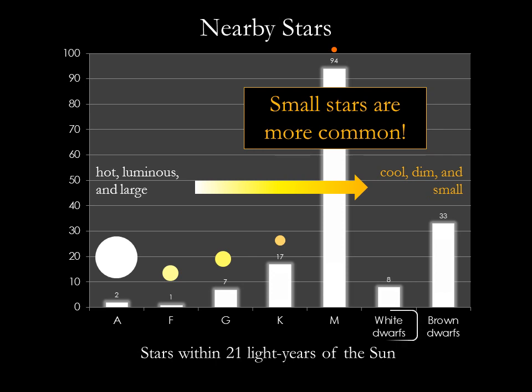Both white dwarfs and brown dwarfs are also small and faint. We'll talk more about both of these types of objects later in the semester. For now, it's enough to know that white dwarfs are dead stars that have run out of their nuclear fuel. Brown dwarfs, on the other hand, are failed stars that never became massive enough to begin hydrogen fusion in the first place. Because they're so faint, many of the brown dwarfs in our local neighborhood have not yet been seen with any telescope, so the number we have here for them is artificially low.